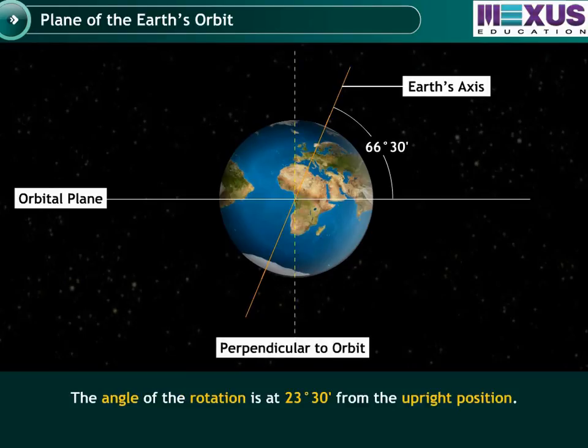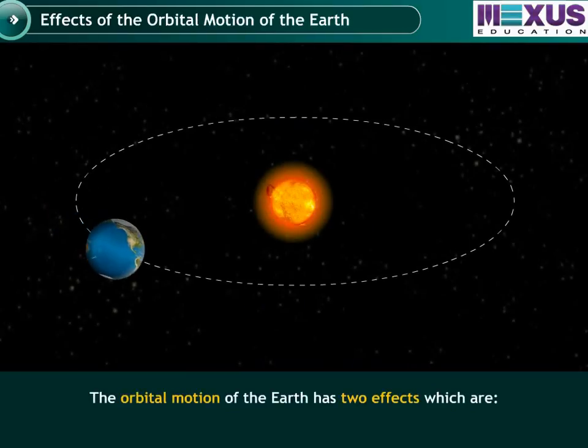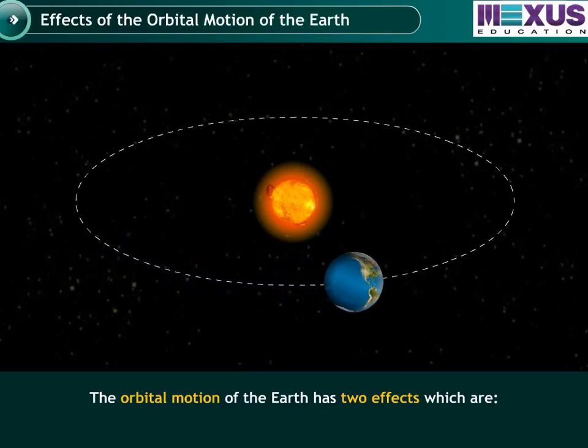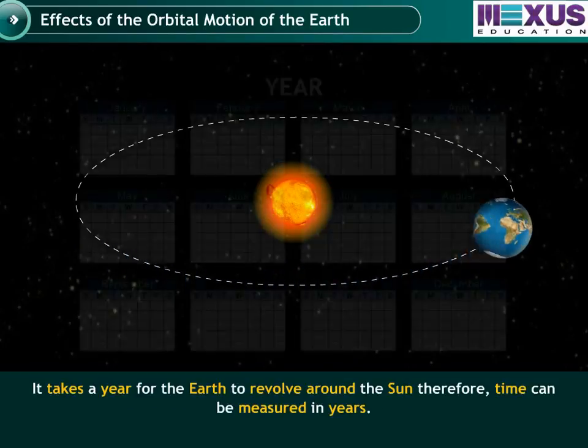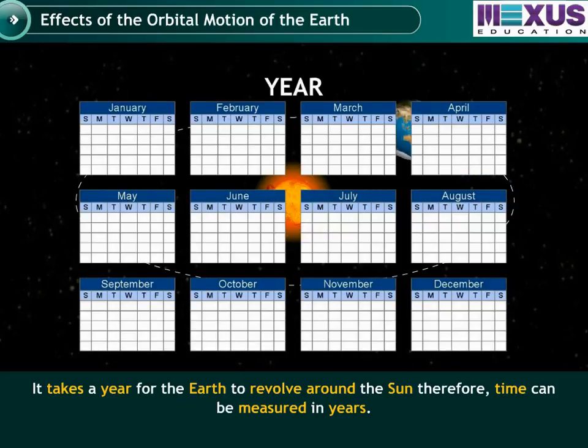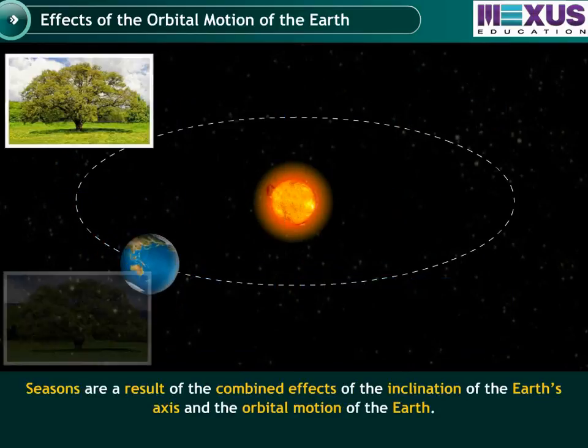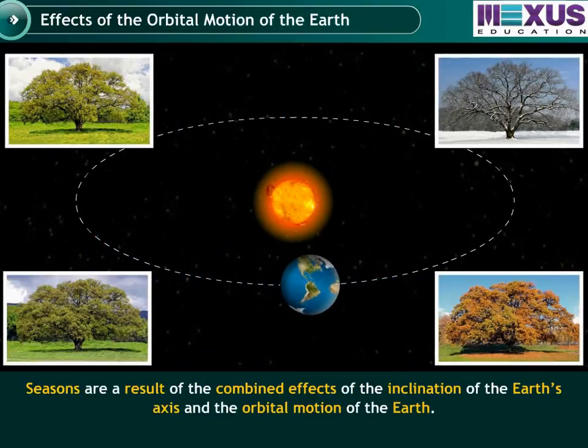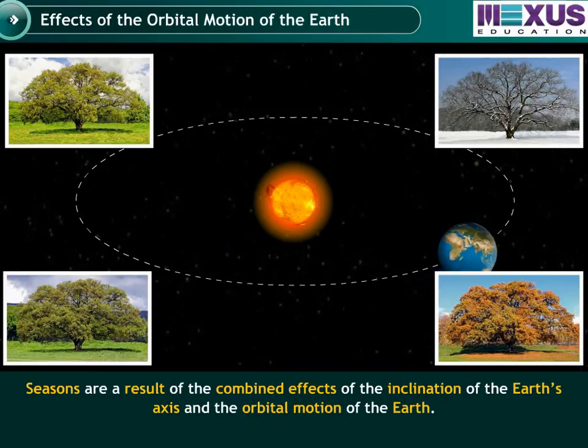This implies that the axis is inclined at an angle of 23 degrees, 30 minutes, from its upright position. The orbital motion of the Earth has two main effects. It takes a year for the Earth to revolve around the Sun. Therefore, time can be measured in years. Seasons are a result of the combined effect of the inclination of the Earth's axis and the orbital motion or revolution of the Earth.